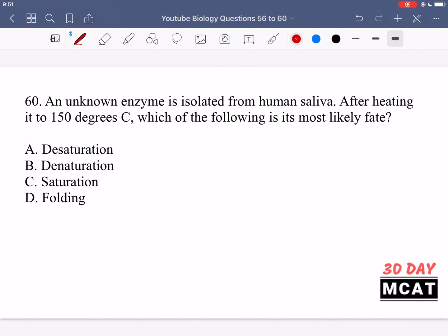Question 60 says an unknown enzyme is isolated from human saliva. After heating it to 150 degrees Celsius, which of the following is its most likely fate? We took an enzyme and heated it to 150 degrees Celsius. What happens when you increase the temperature of any protein to a very high temperature that's far removed from where it's normally operating? We're talking about human saliva, meaning it operates at body temperature, which is around 37 degrees Celsius. So at 150 degrees Celsius, this protein is not meant for that temperature.